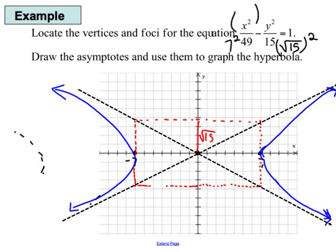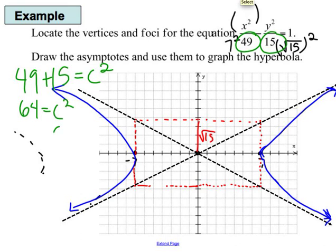Now, remember, we also want to find the foci because they're important for the application. So we're going to add the two values, 49 plus 15, and that equals C squared. So in this case, 64 is C squared. That means C is 8.